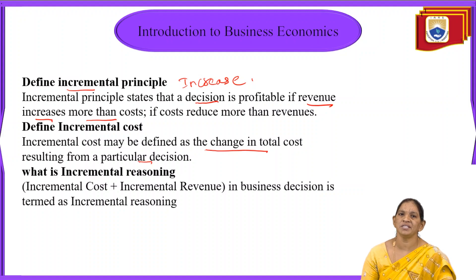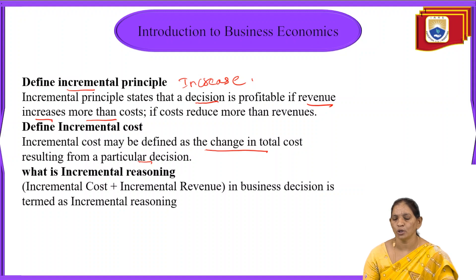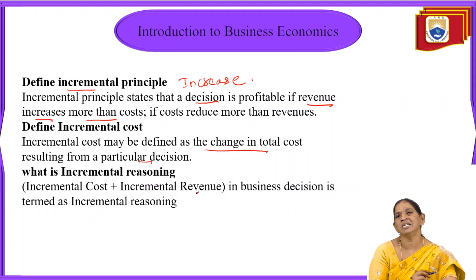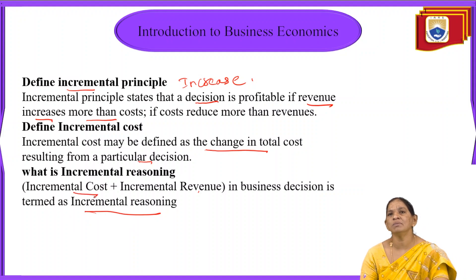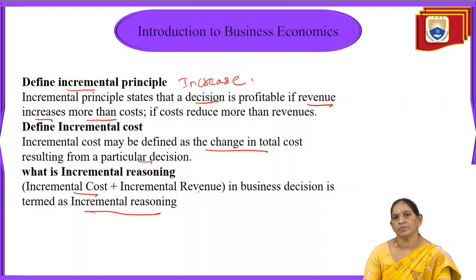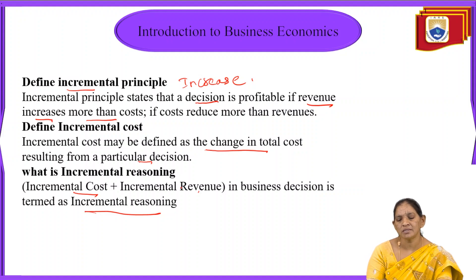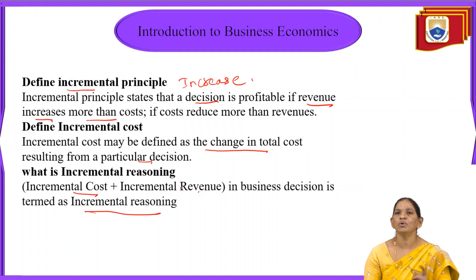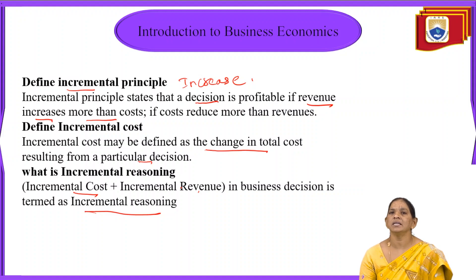Next, what is incremental reasoning? Incremental reasoning involves both the incremental principle and incremental cost — that is, incremental revenue plus incremental cost. Incremental revenue means attaining more revenue than cost; incremental cost means an increase in total cost. When a firm or organization involves both these concepts together in decision making, that is termed incremental reasoning.